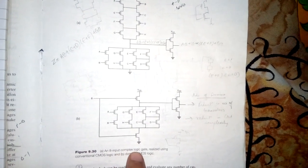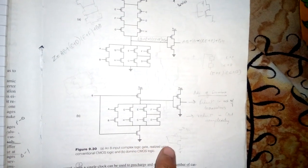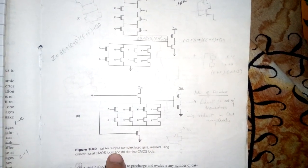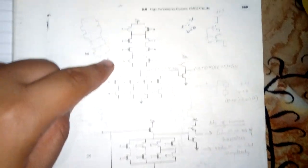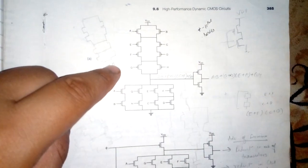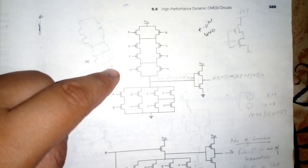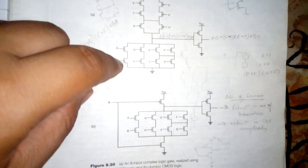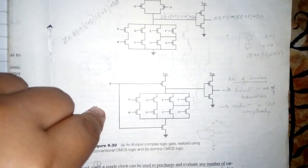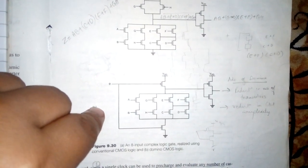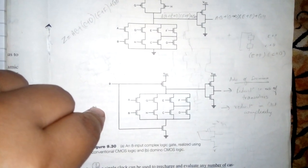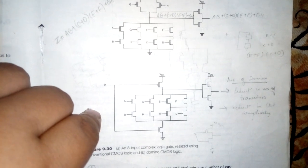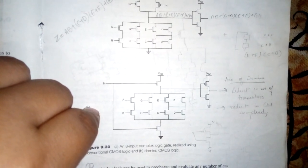You can see from the diagram: this is an eight-input complex logic gate realized using conventional CMOS logic. In the first diagram, the number of transistors is greater, while in the second case, realizing the same circuit with Domino CMOS logic requires fewer transistors.